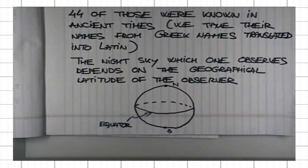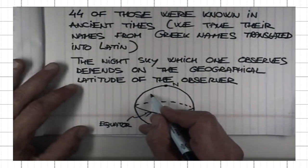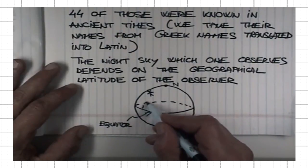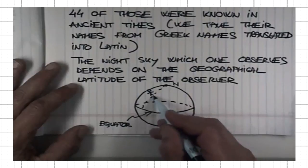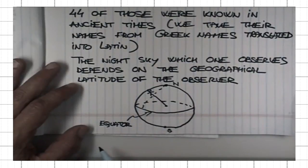This plane that bisects the Earth along the equator is called equatorial plane. Then, if I have an observer, say, at mid-latitudes here, I draw the line between him and the center of the Earth.